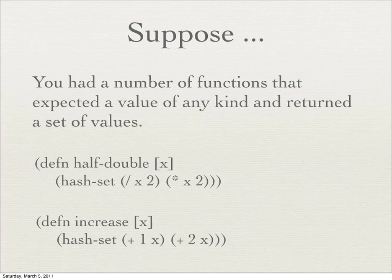So that's the list monad. A lot of people start with the maybe monad, which is a subset of the list monad — the list can only have either no values or one value. But I decided to go right to the list. Any questions about the list monad? That's just a quick introduction.